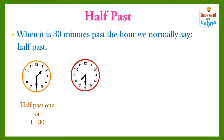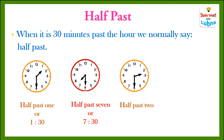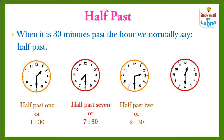Look at the second analog clock — what time is it? It is half past 7, or 7:30. Look at the third analog clock — what time is it? It is half past 2, or 2:30. What time is it? It is half past 12, or 12:30.